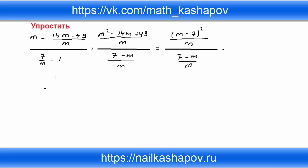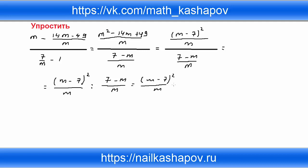Получается: (m минус 7)² — первая дробь — мы делим на вторую дробь (7 минус m) делённое на m. При делении дробей нет деления, есть умножение: первая дробь остаётся такой же, вторая переворачивается. Мы получаем (m минус 7)² делённое на m, умноженное на m делённое на (7 минус m).